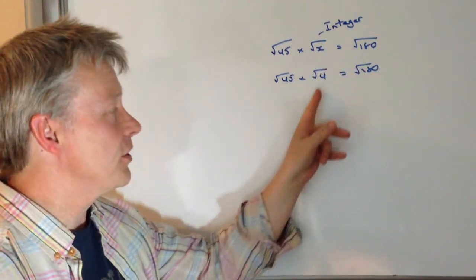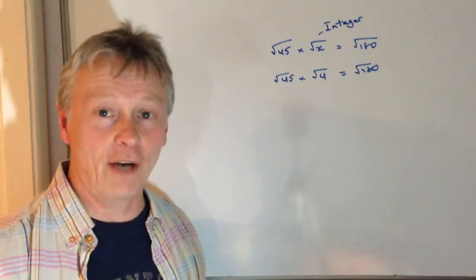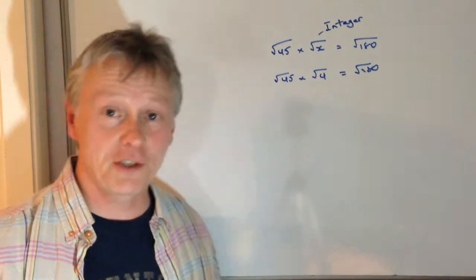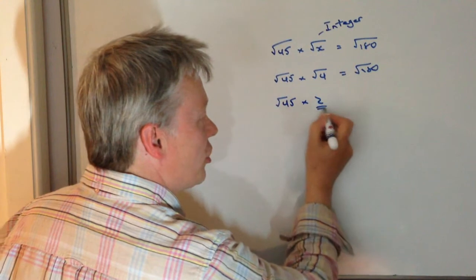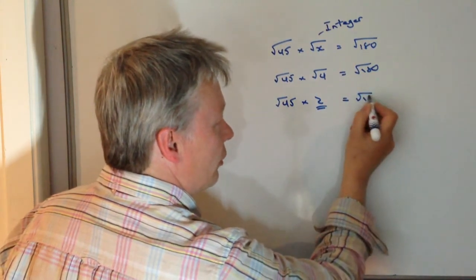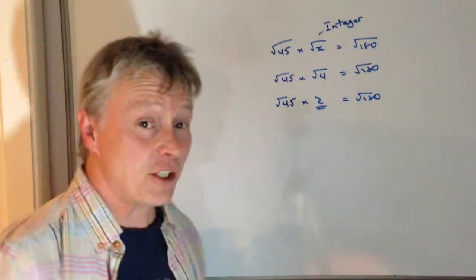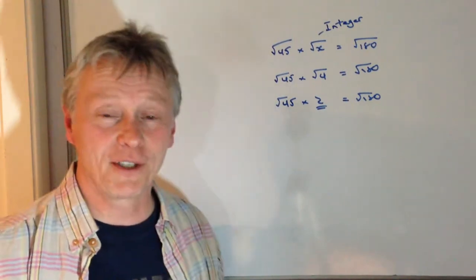So therefore, if this is an integer, what we're talking about is the square root of 4, which is 2. So the answer to this particular question is root 45 times 2 equals root 180, and actually that's the answer to this particular question.